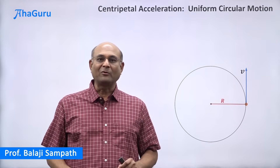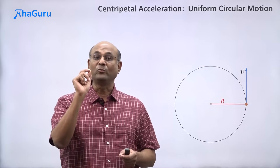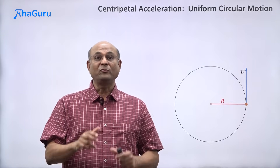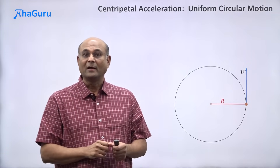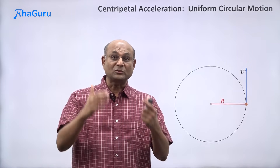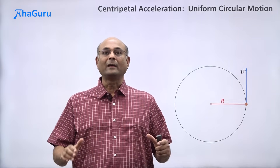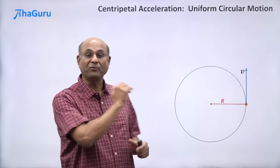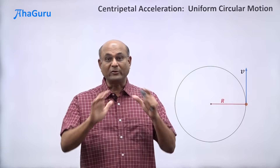We are now going to learn about the acceleration of a particle that is in uniform circular motion. First, I will give you an intuitive picture of how this acceleration comes about. I will give you the formula without any proof, and we will even solve problems using it. Then I will come back and redo everything rigorously, step by step, proving and deriving the formula for the acceleration of this particle.